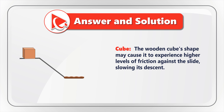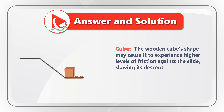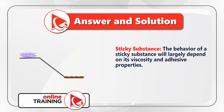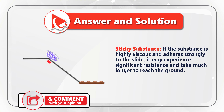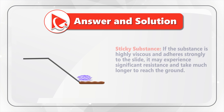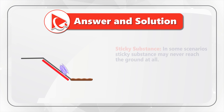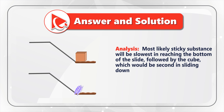Let's start with the cube. A cube's shape may cause it to experience higher levels of friction against the slide, slowing its descent. But at the same time, a sticky substance may move even slower, because the behavior of sticky substance will largely depend on its viscosity and adhesive properties. If the substance is highly viscous and adheres strongly to the slide, it may experience significant resistance and take much longer to reach the ground. In some scenarios, depending on viscosity, the sticky substance may never reach the ground at all.